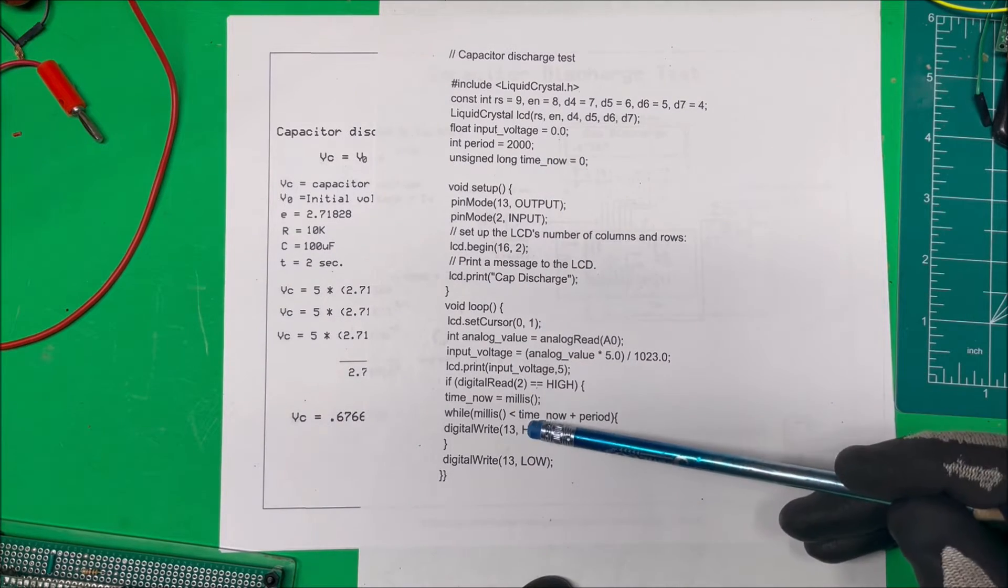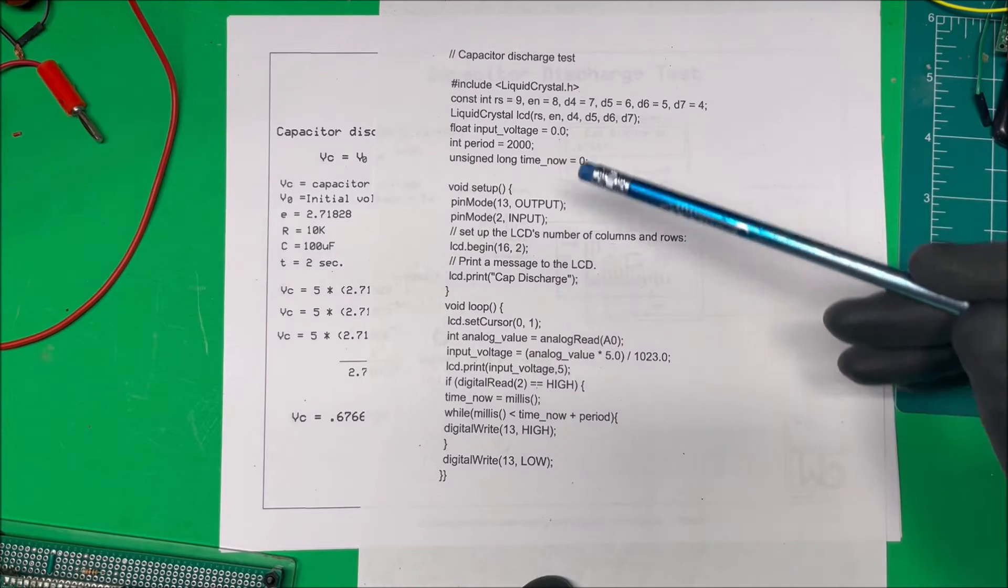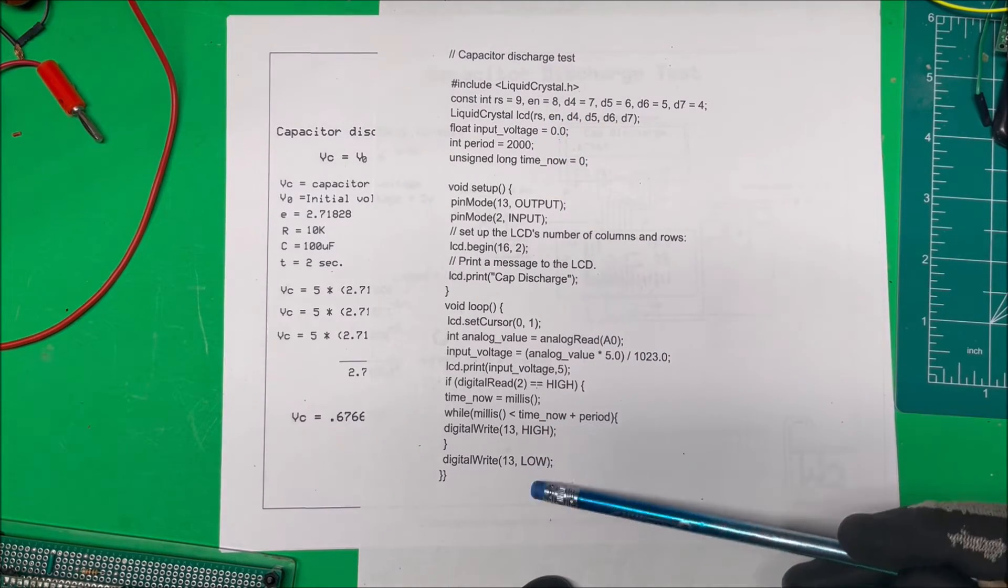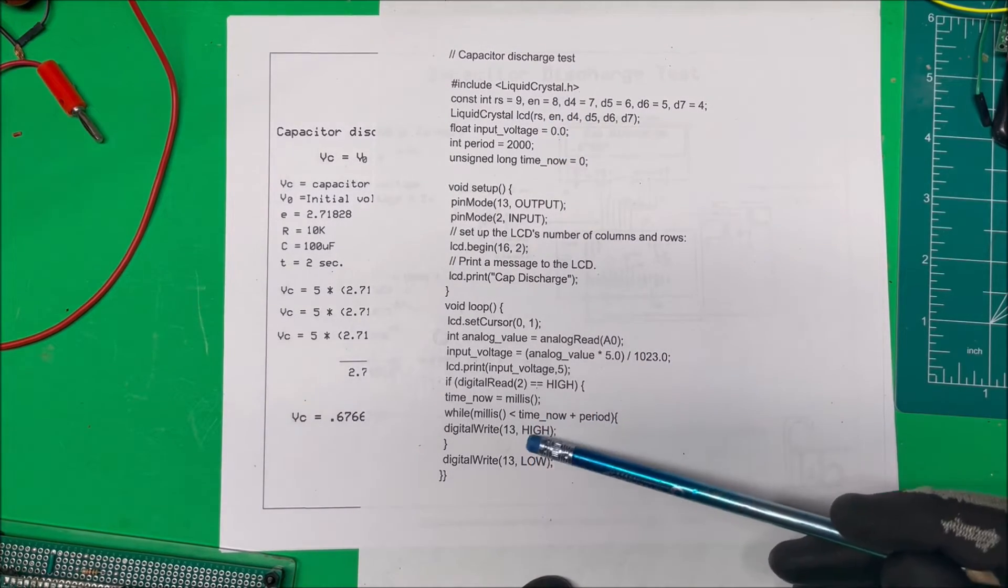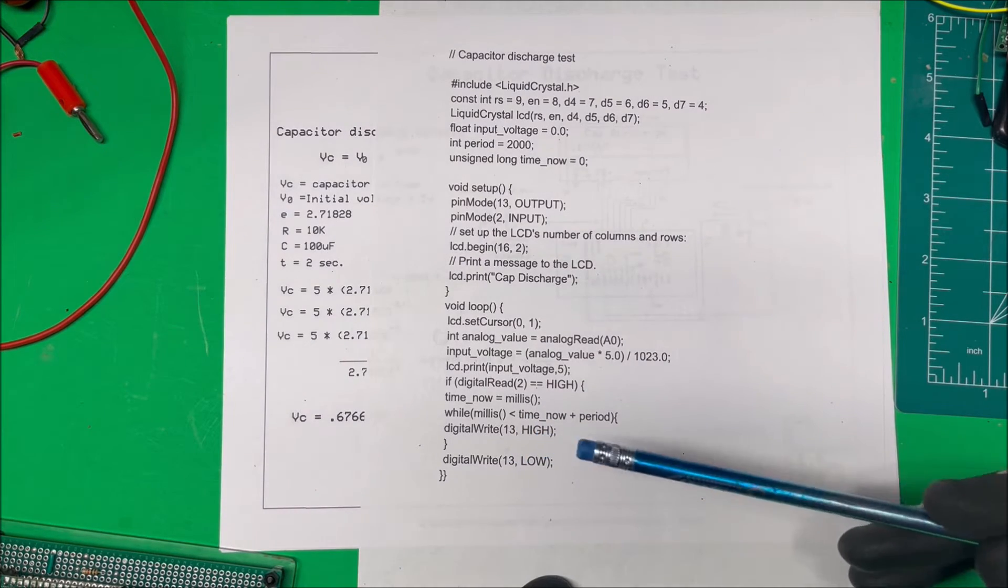So that in the future I can read out the time and I can actually change this period. But for now I'm just using this milliseconds. And you could just use a delay if you want.